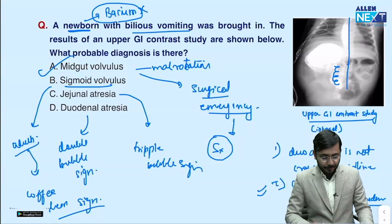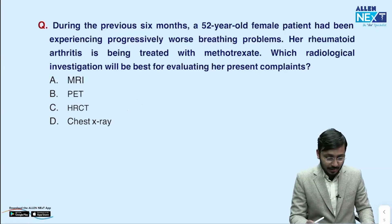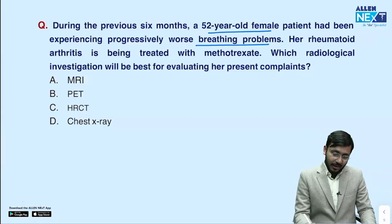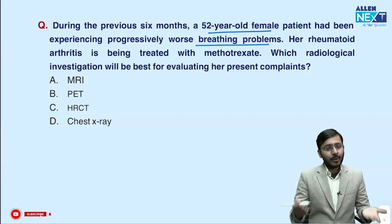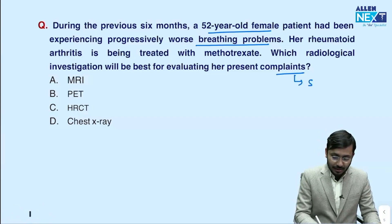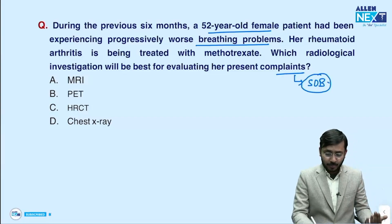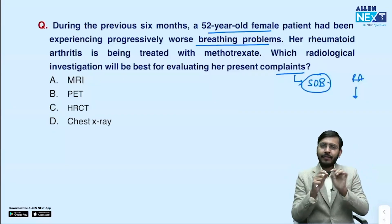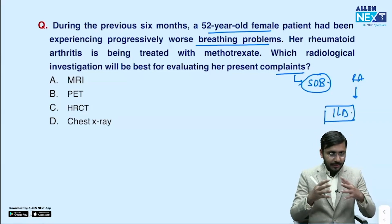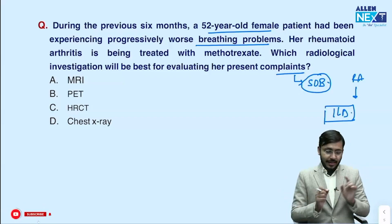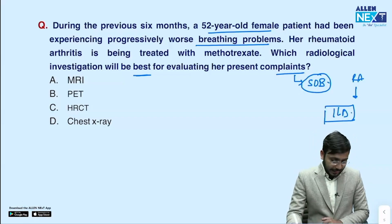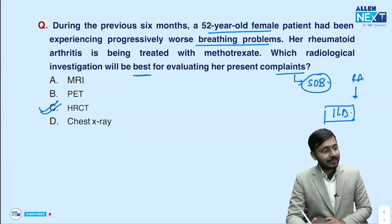Next question: a 52-year-old female patient has been experiencing progressively worse breathing problems over six months. Her rheumatoid arthritis is being treated with methotrexate. Which investigation best evaluates her present complaints? Combining rheumatoid arthritis with shortness of breath, we suspect interstitial lung disease. Among chest X-ray versus HRCT, since the question asks for the best investigation, the answer is HRCT.